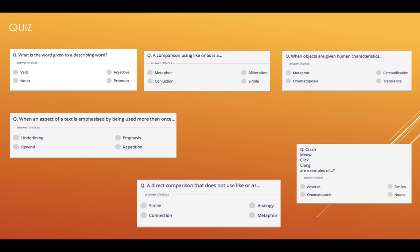Number six, crash, meow, click, clang, are examples of adverbs, similes, onomatopoeia, or nouns. Now hopefully you've been able to keep up, you've not had to press the pause button. So we're going to mark these six before we go to the next slide, as we have another four on the next slide.